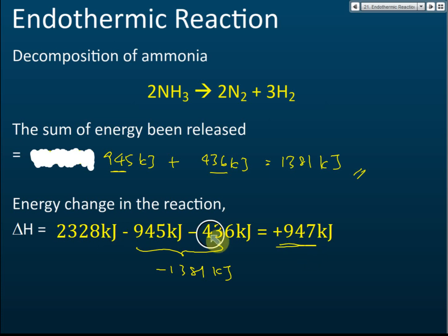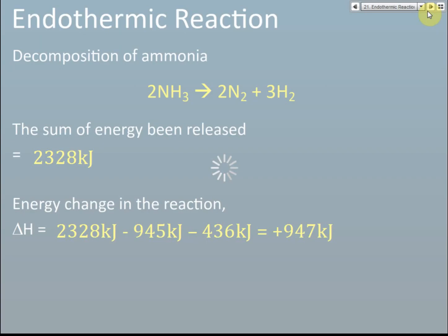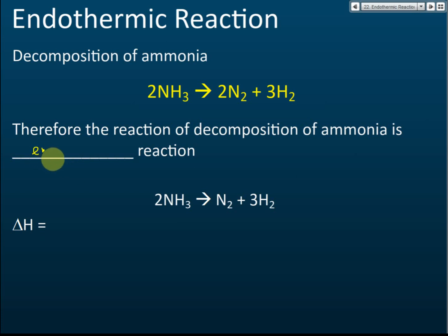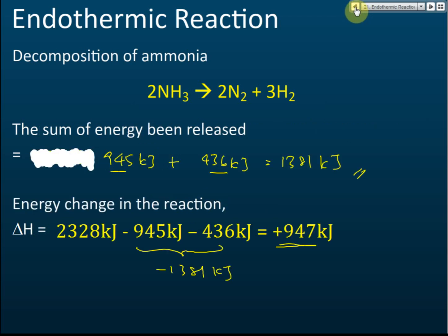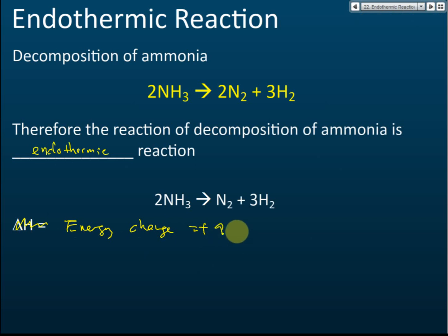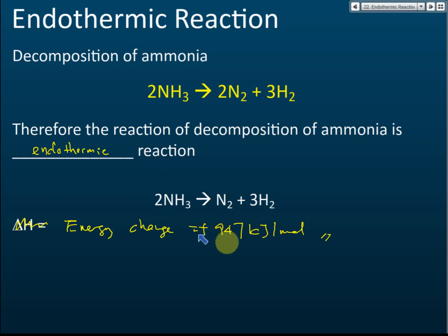This is an endothermic reaction because the energy absorbed is higher than the energy released — there is a net energy gain. The energy change is positive 947 kJ. These values are fixed, but you don't need to memorize them — in exam questions, all the values will be provided for you.